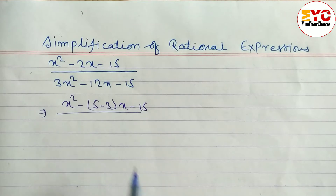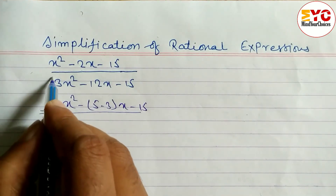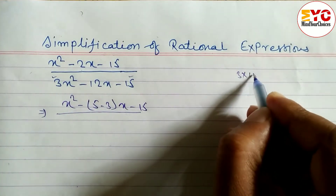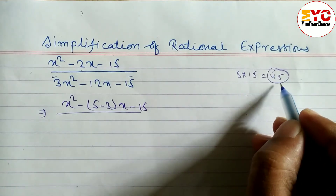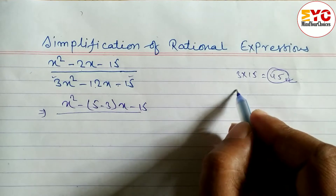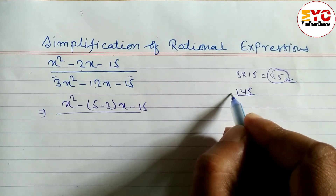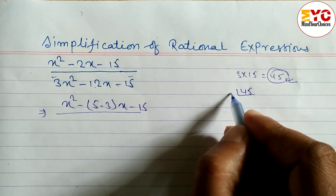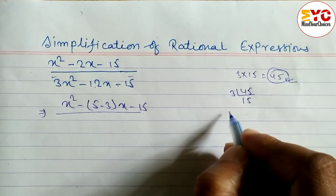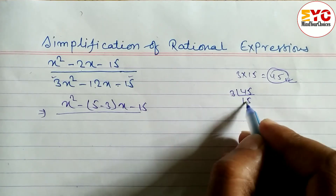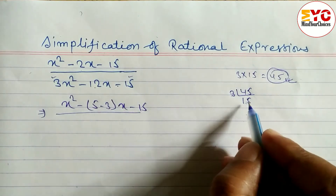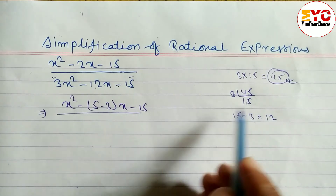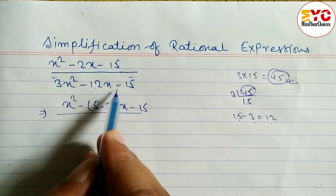You can do like this. Now in the denominator, first of all we have to multiply the first and last number: 3 × 15. How much do we get? 45. So while multiplying we get 45. Now we have to find a factor pair whose multiplication is 45 and subtraction is 12.